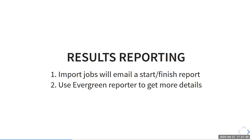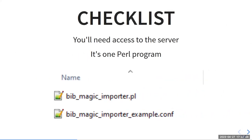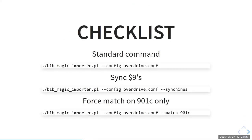One thing not on this slide is that it can be reversed. So if it makes a mistake or you don't like what it did, you can go back in time to the previous state of the records. Let's have a checklist of what you need to run this thing. You will need access to the server. It is one Perl program — the BibMagic importer — and there's an example config file.